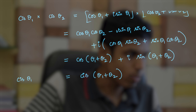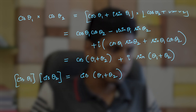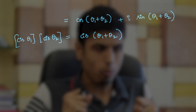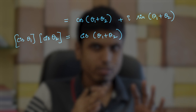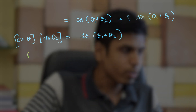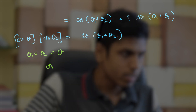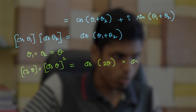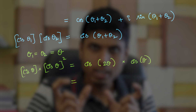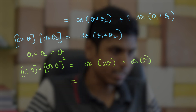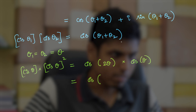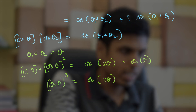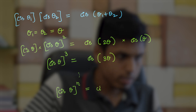So when cis thetas are multiplied, the angles are added — a very useful and simple result. If we take theta 1 equal to theta 2 equal to theta, then cis theta squared equals cis 2 theta. Multiplying both sides by cis theta again, we get cis 3 theta on the right. By induction, we can easily prove that cis theta to the power n equals cis of n theta.